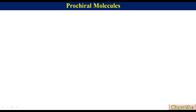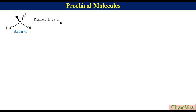Prochiral Molecules are molecules that are achiral but can be converted to chiral in a single step. For example, ethanol is achiral. If we replace one of the two hydrogens by deuterium, it gives monodeuterated ethanol, which is chiral. So ethanol is a Prochiral Molecule.